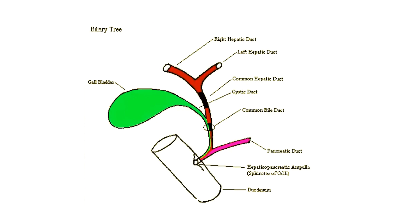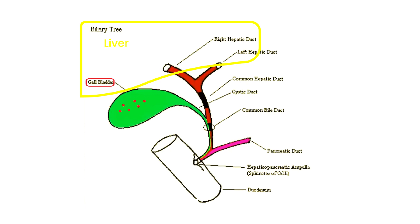This is the biliary tree. The liver is part of this anatomy and sits roughly here if we were to draw it in. What's important is this network of ducts. First, here you have the gallbladder. The stones will be sitting inside the gallbladder, and that's the definition of cholelithiasis — stones inside the gallbladder. Coming out of the liver you have the right and left hepatic ducts, and they join to form the common hepatic duct.